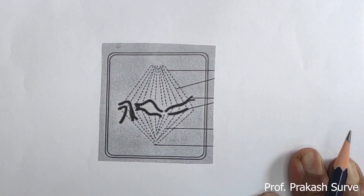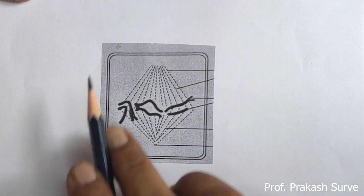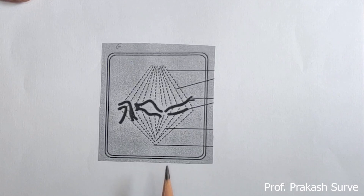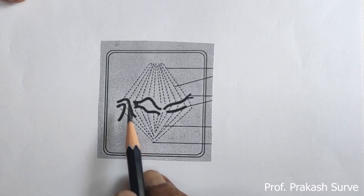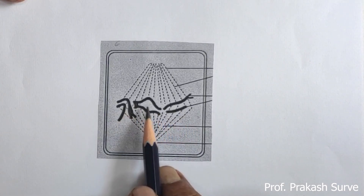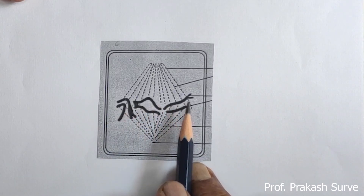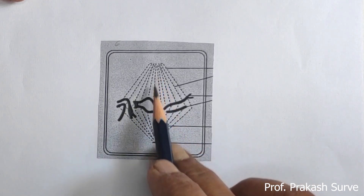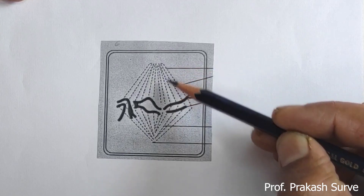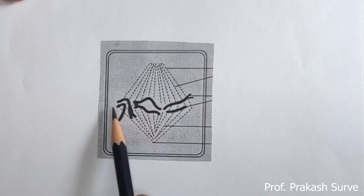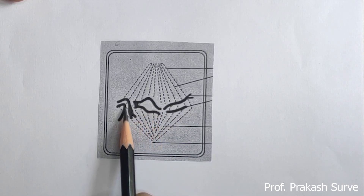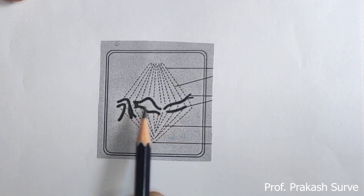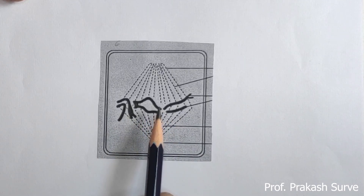Next we will see metaphase one of meiosis one. What we observe: the pairs of chromosomes, called bivalents, are arranged in the equatorial plane. At the same time spindle fiber formation takes place. These bivalents — one paternal and one maternal — are all arranged at the equator.